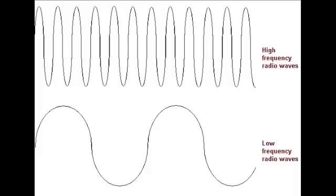Frequency is the number of repeating patterns or cycles per unit of time. In the case of an ultrasound wave, the frequency is determined by the number of oscillations per second of the vibrating source, usually a piezoelectric element. The top wave is a high frequency wave, whereas the bottom wave is a low frequency wave.